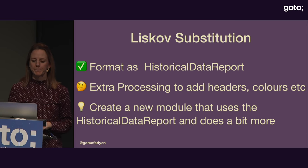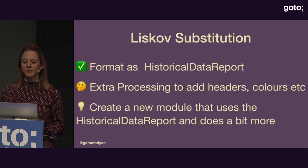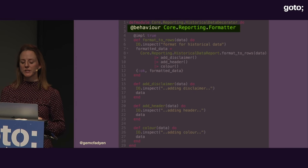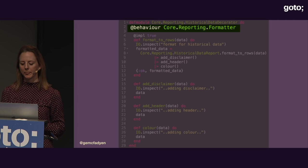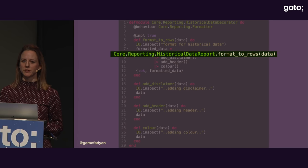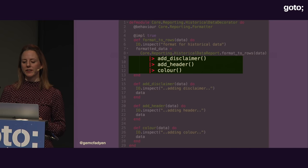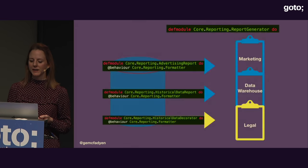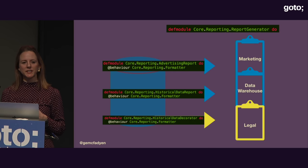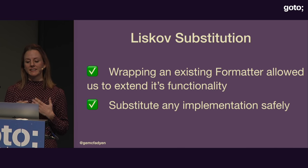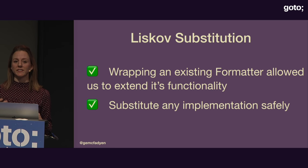We want to reuse the formatting in the historical data report but need to do something extra. Rather than updating the existing report, let's create a new one that uses the existing one. We create a new report that implements the original formatter behavior so we don't break any contracts. Inside the `format_to_rows` function, we delegate out and use our existing data warehouse module to leverage the existing `format_to_rows` functionality, then add the new presentation functions hidden behind private methods. Now all our reports adhere to the same interface, so we don't need a special legal generator — we can use the same report generator for all of them.